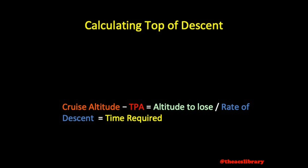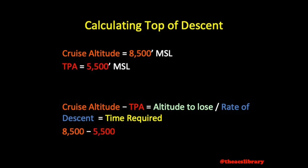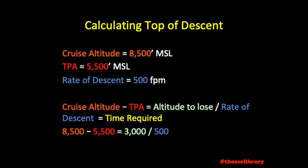For instance, if one is cruising at 8,500 feet MSL and planning to land at an airport with a pattern altitude of 5,500 feet, then we would need to lose 3,000 feet — meaning a descent rate of 500 feet per minute would result in a 6-minute-long descent to traffic pattern altitude. Assuming you start a clock as soon as you turn inbound to the airport, simply begin your descent 6 minutes prior to reaching the airport.